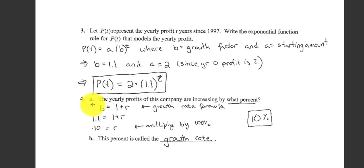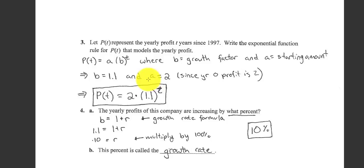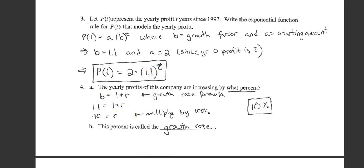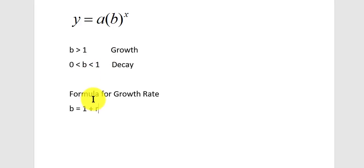Now, part four says the yearly profits of this company are increasing by what percent? Now, some people are going to say, oh, 1.1 percent. But remember, this B is your growth factor. To find growth rate, we need the growth rate formula. The formula for growth rate is B equals 1 plus R.